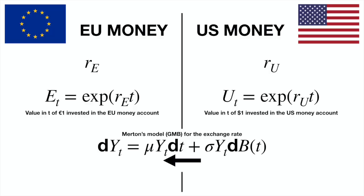On your screen, you can see a stylized representation of our exchange rate problem. We have two different risk-free assets: one expressed in euros, the euro money account, and one expressed in dollars, the US money account. The euro account pays a risk-free interest rate RE, and for the US market we have a risk-free rate RU. What is risk-free for the euro investor is not necessarily risk-free for the dollar investor because of the exchange rate. The exchange rate is the quantity Y_T, and we assume a Merton-like model in which the exchange rate — how many euros we can get with one dollar — is a geometric Brownian motion, as shown on your screen.